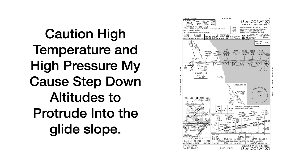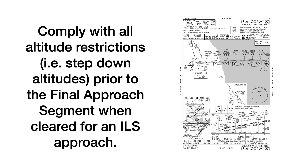So here's a caution. High temperature and high pressure may cause the step-down altitudes to protrude into the glide slope. This is actually verbiage from the FAA put out in a safety notice. If you look at most of these glide slopes, the actual intercepts will be along those points on the profile view and intercept at the altitudes indicated. Not so in this case during high temperature and high pressure — and that could be true at many different ILSs around the system. The most important takeaway is: if you're given the ILS to 27 left, comply with all altitude restrictions — all step-down altitudes prior to the Final Approach Segment when cleared for an ILS approach.